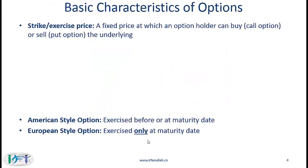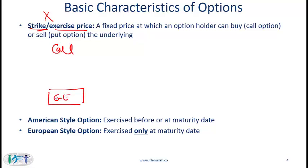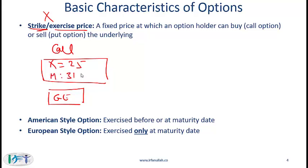An option will always have a strike price or an exercise price, denoted by X. These two terms are synonymous. The strike price is the fixed price at which an option holder can buy the underlying — here we are talking about a call option. Let's say the underlying is one stock of General Electric. The option contract gives the holder the right to buy the underlying, and will define the strike price — say $25 — a maturity date, say 31st December, and will specify the underlying, which is General Electric.